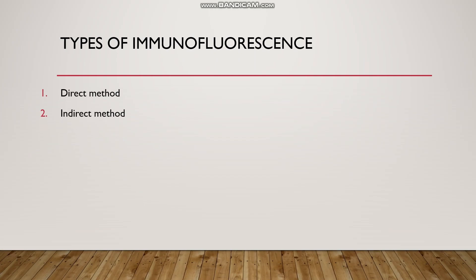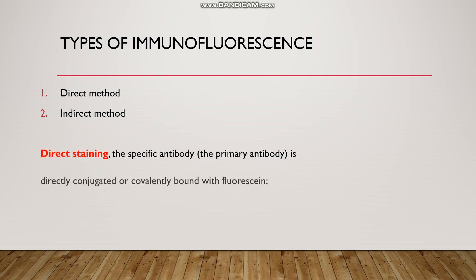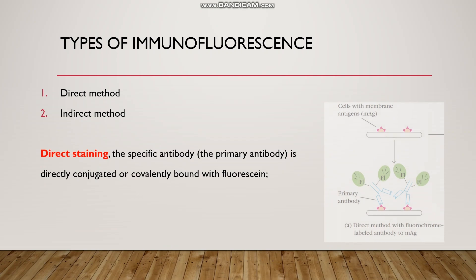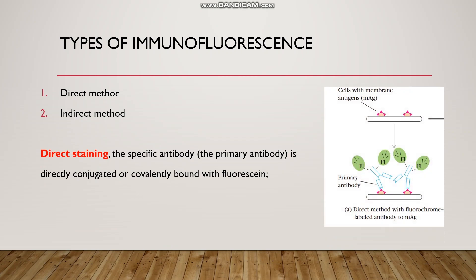Generally, immunofluorescence has two methods: direct staining method and indirect staining method. In the direct staining method, the specific primary antibody is directly conjugated or covalently bound with a fluorescent compound. The picture shows cells with membrane antigens attached to the primary antibody shown in blue, which is already tagged with the fluorescent compound shown in green. We measure this fluorescence by fluorescent microscopy.